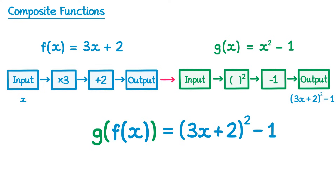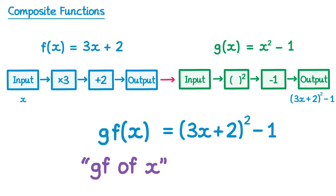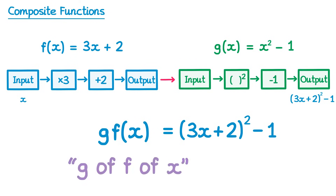We wouldn't normally write it with the double brackets on the left hand side — we'd remove the outer set of brackets. We would pronounce the left hand side as gf of x, or possibly g of f of x.